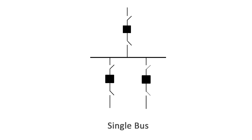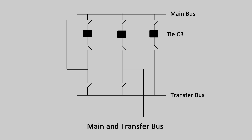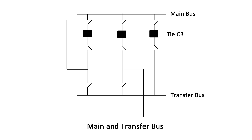Reliability and availability of this system can be improved by expanding and sectionalizing the bus. Number 2. Main Bus and Transfer Bus. In the main bus and transfer bus arrangement, one or more buses are added to the single bus substation scheme.